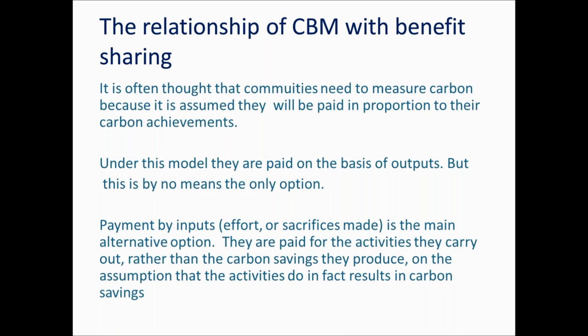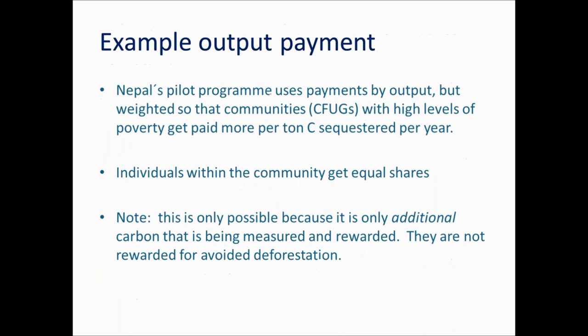Nepal, one of three case studies in the module, uses a system of output payments, weighted so that poorer communities get paid more per tonne of carbon than richer communities, with money divided equally between individuals within the community. But the only reason this is possible is because what they're measuring is increases in carbon — they can't measure decreased deforestation because they don't have historical data at the community level. It's much easier to measure increases in forest due to forest enhancement. It's very difficult to pay for avoided deforestation on the basis of performance because you need a historical baseline at each community level separately, which is very expensive and time-consuming.